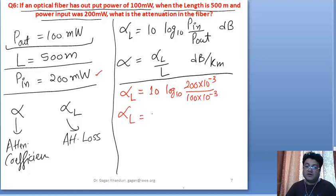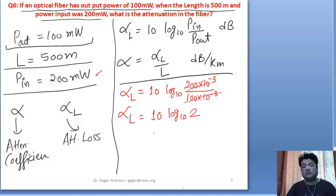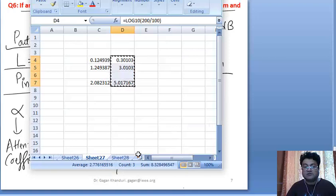Alpha_L will become 10 log base 10 of 2. Log base 10 of 2 is 0.3010. Let me check it.